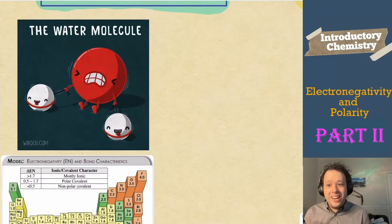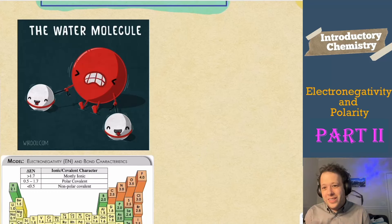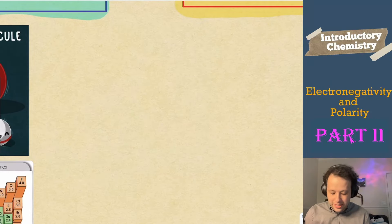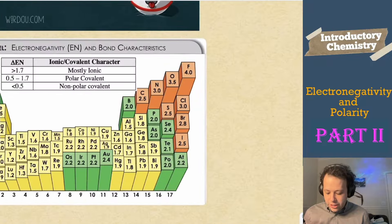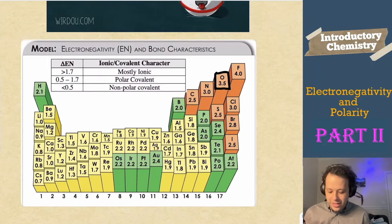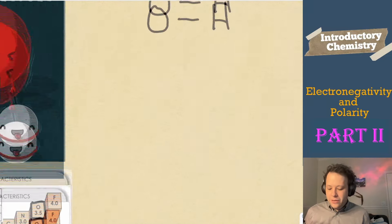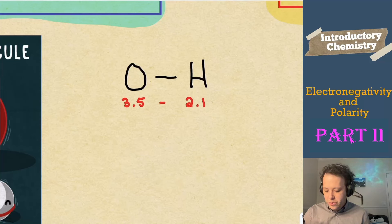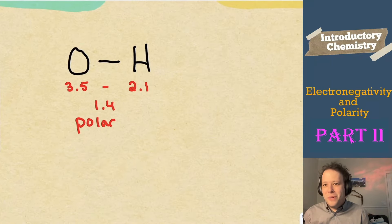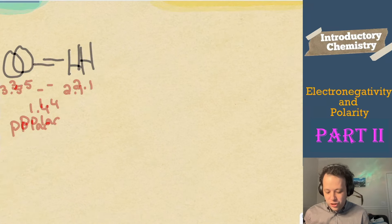If you have a water molecule, you can see the oxygen is really pulling on both hydrogens. If I look at just the O-H bond from last time, oxygen has a value of 3.5 and hydrogen has a value of 2.1. So if we take that difference, 3.5 minus 2.1, that is a 1.4 difference, so it's going to be polar. But O-H isn't a molecule by itself — it's just one bond.